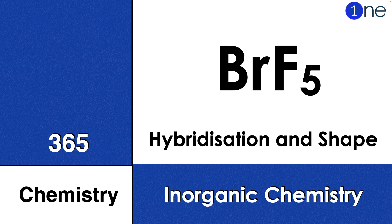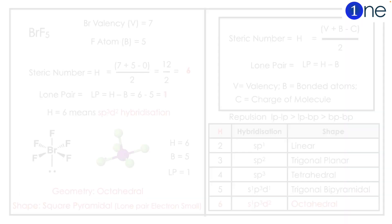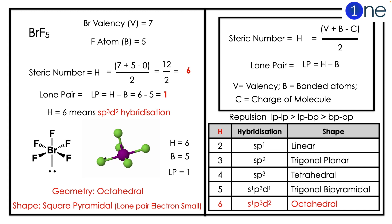Welcome to One Chemistry. This is the 365 Chemistry series on inorganic questions. Here you have bromine pentafluoride (BrF5), and you need to find its hybridization and shape. The shape can be identified by the steric number using the steric number formula.